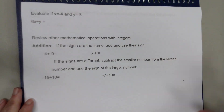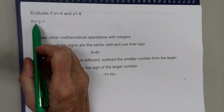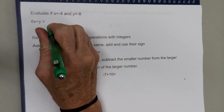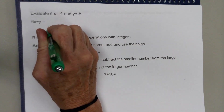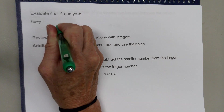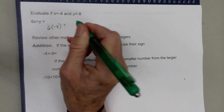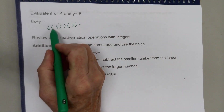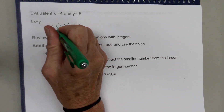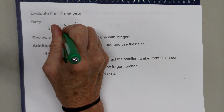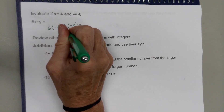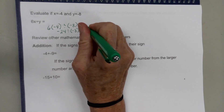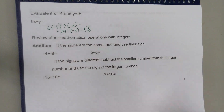Here's another example: 6x divided by y, where x equals negative 4 and y equals negative 8. So you have 6 times negative 4 divided by negative 8. 6 times negative 4 gives negative 24. Then negative 24 divided by negative 8 — the signs are both negative, so the answer is positive 3.